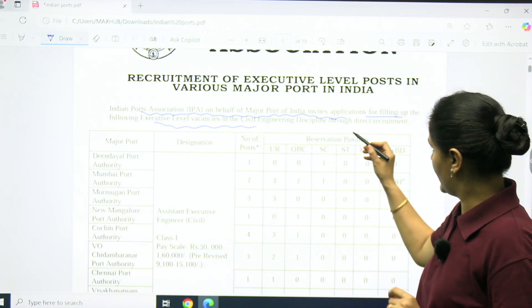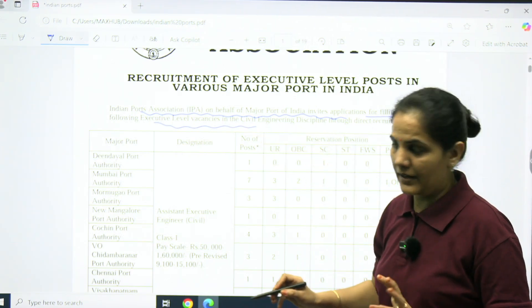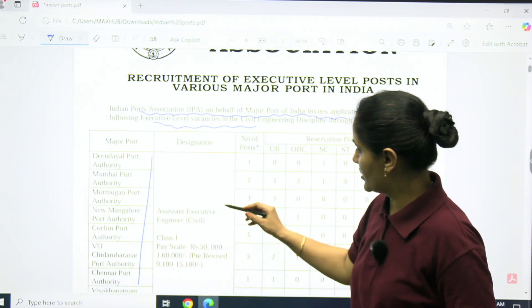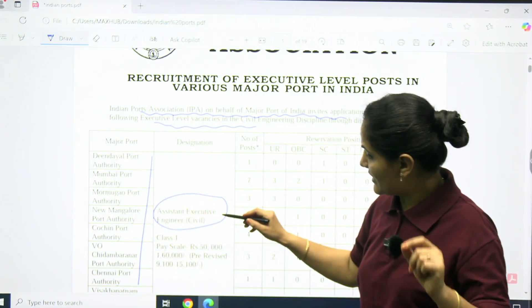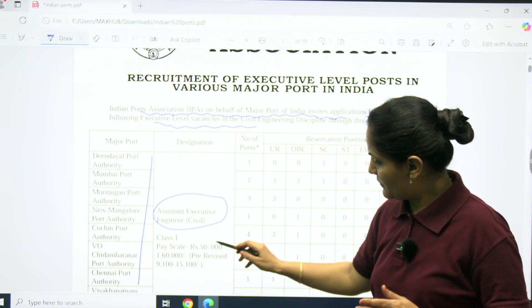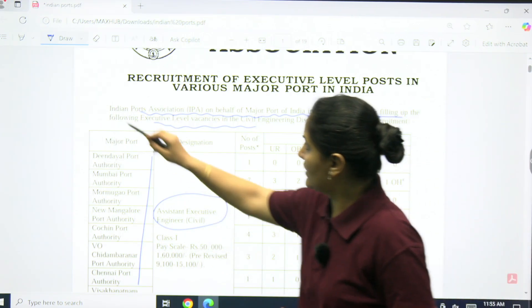They mention the major ports, name of the ports. The designation will be Assistant Executive Engineer Civil, Class 1, pay scale rupees 50,000 to 1 lakh 60,000, and they mention the number of posts also.